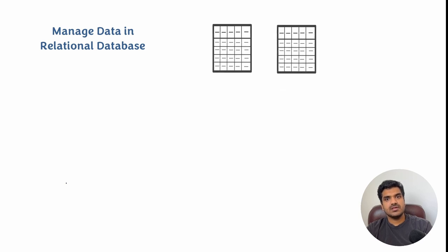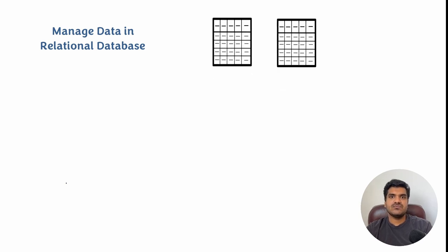SQL will help us to manage data in a relational database. So what is a relational database? In a relational database, the data is stored in the form of tables - in the form of rows and columns - and those data will be related to each other.